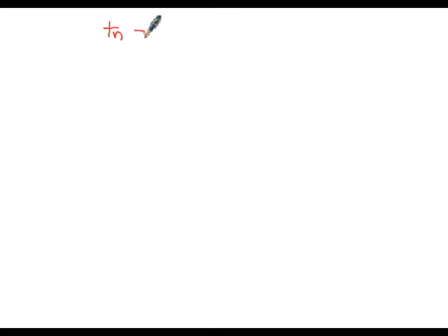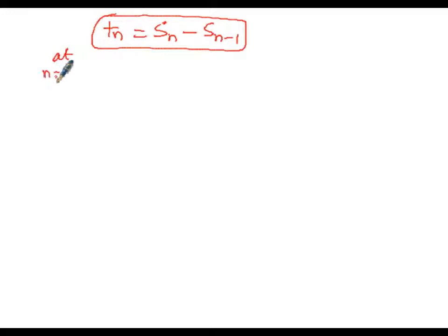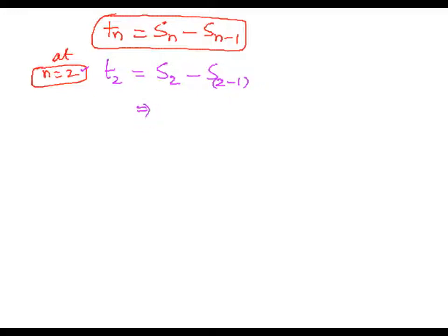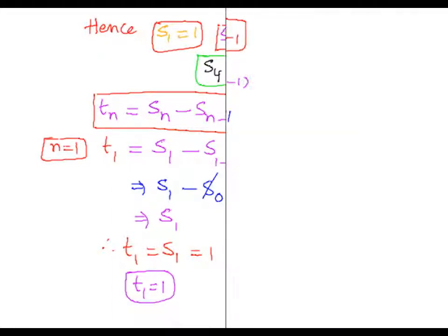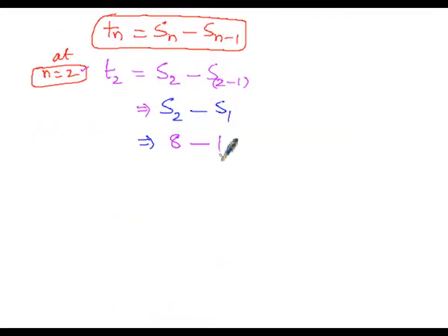For the second term at n=2: t(2) = S(2) - S(1) = 8 - 1 = 7. So the second term t(2) equals 7.